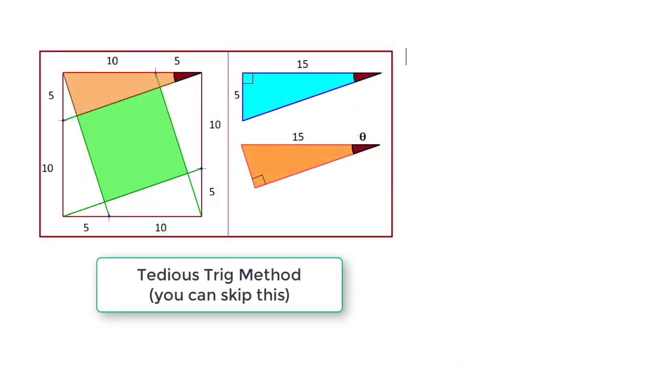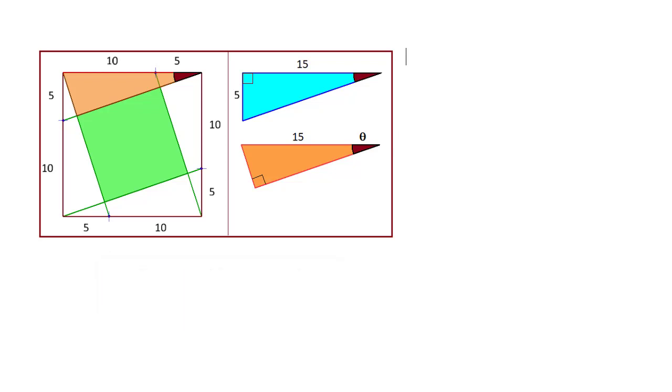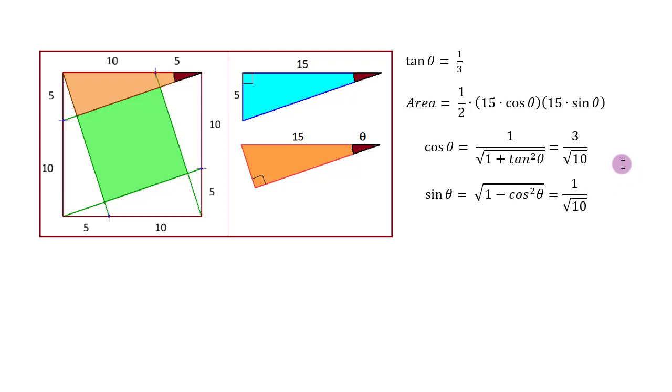Let us now see if there is some other way of solving this problem. There are so many ways of doing this puzzle, but we are going to go to the other extreme and use trigonometry. We can start by looking at this triangle - opposite side is 5 and adjacent side is 15. We can find the tan of this angle theta as 1/3. We can express the area of this triangle as half of 15 cos theta and 15 sine theta. Then from this tan we can find the cos and sine ratios - they turn out to be 3 upon root 10 and 1 upon root 10.